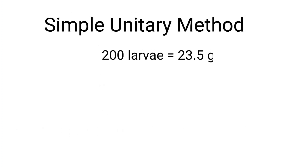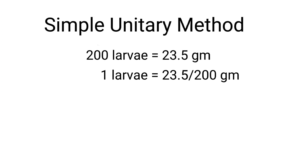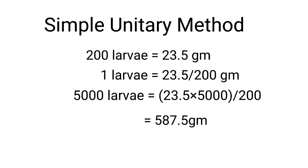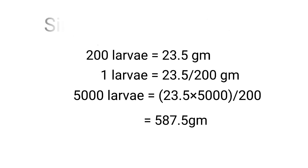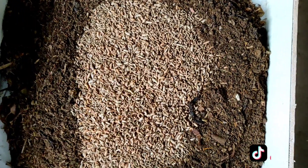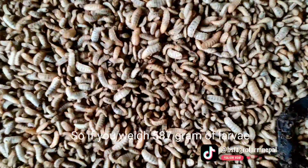By simple unitary method: if 200 larvae equals 23.5 grams, then 1 larva equals 23.5 ÷ 200 grams. Therefore, 5,000 larvae equals (23.5 × 5000) ÷ 200 grams, which equals 587.5 grams. So if you weigh 587 grams of larvae, you can get approximately 5,000 larvae.